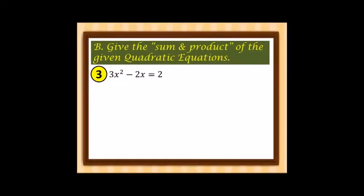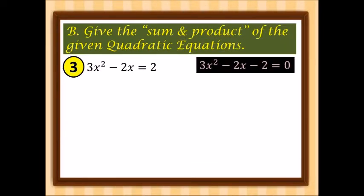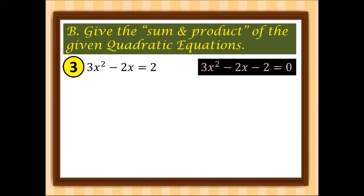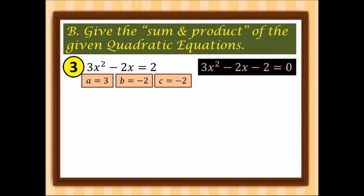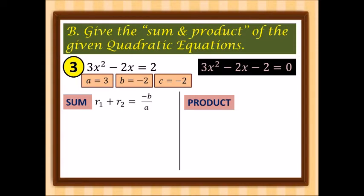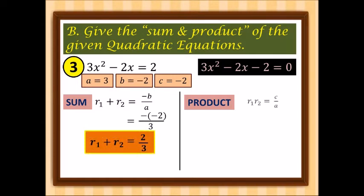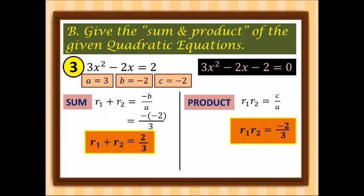Third example, rewritten: 3x squared minus 2x minus 2 is equal to 0. Here a is 3, b is negative 2, and c is negative 2. The sum of the roots equals negative b over a: negative times negative 2 over 3 gives us 2 over 3. For the product, c over a: negative 2 over 3, so the product of the roots is negative two thirds.